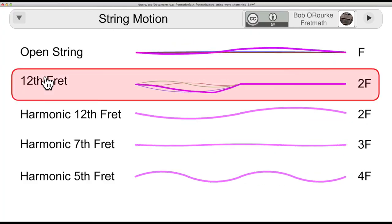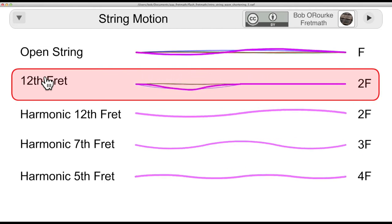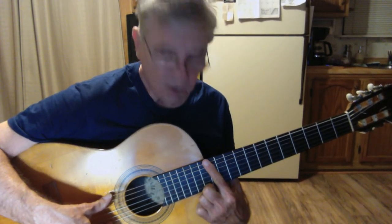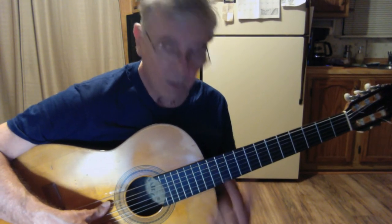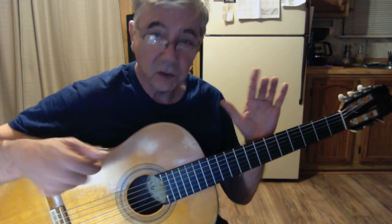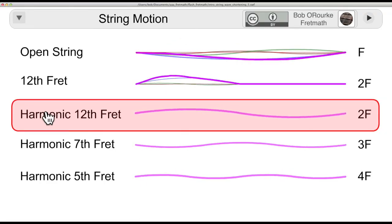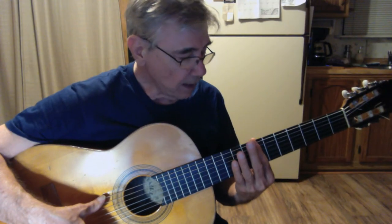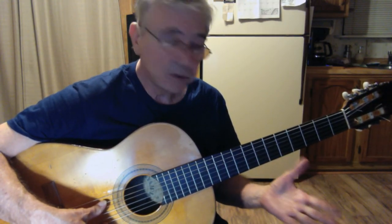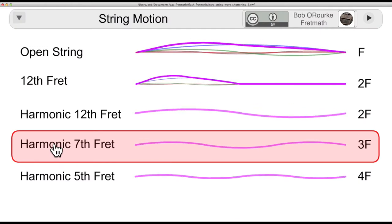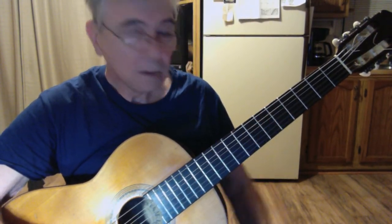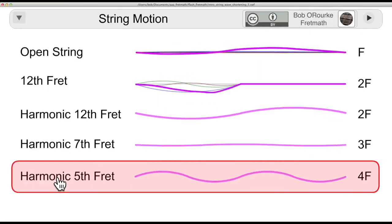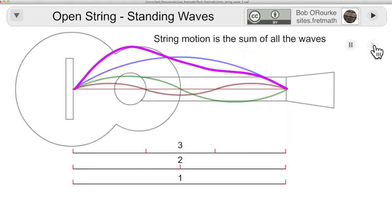12th fret from here to here vibrates at twice the speed with all the upper harmonics going at twice the speed. Playing the harmonic at the 12th fret, touching lightly without depressing onto the fretboard, the entire string vibrates in halves. Seventh fret vibrates in thirds. Fifth fret it'll vibrate in quarters.